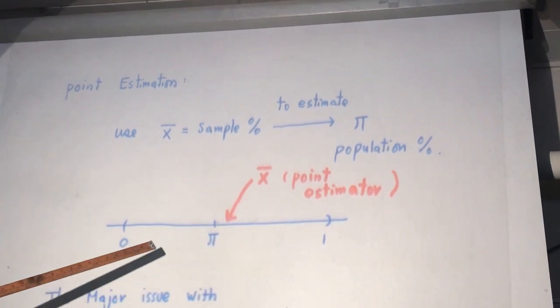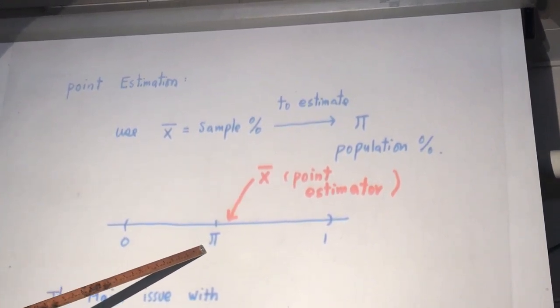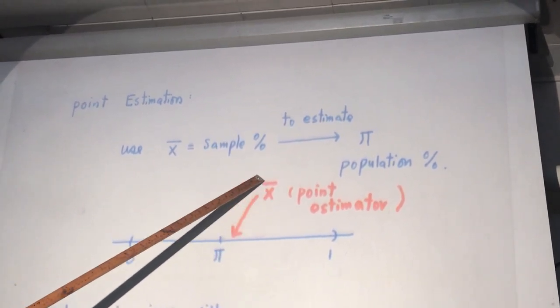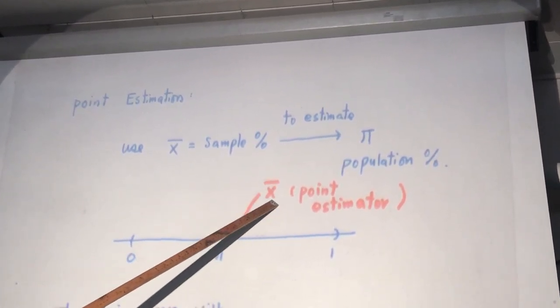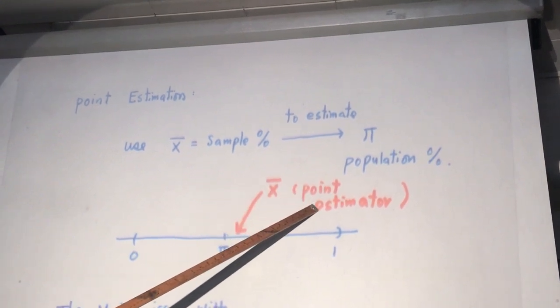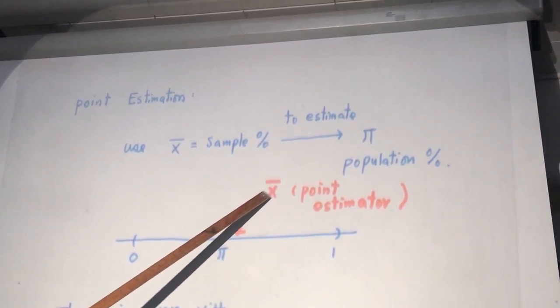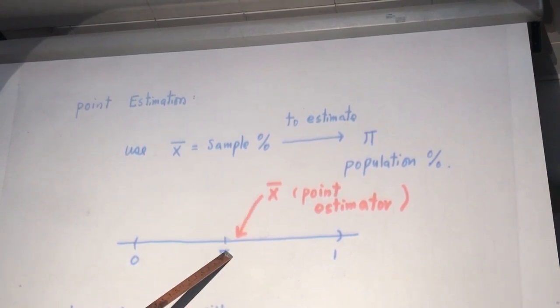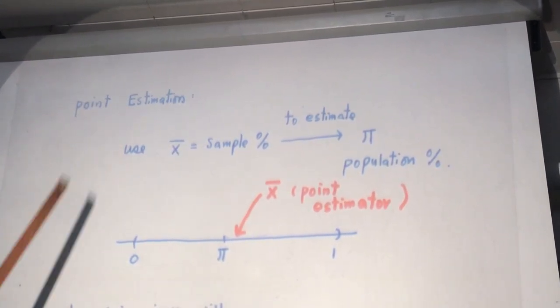And pi is unknown to us. Pi is a number on the real number line, so it's a point. And our estimator sample percentage is also a point. x bar is a point estimator. So use a point to pinpoint the location of another point. Point to point. That's why we call this point estimation.